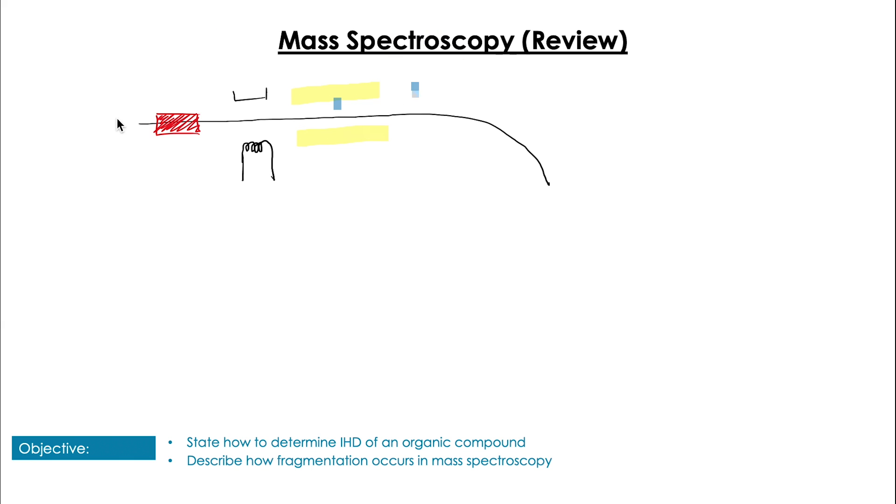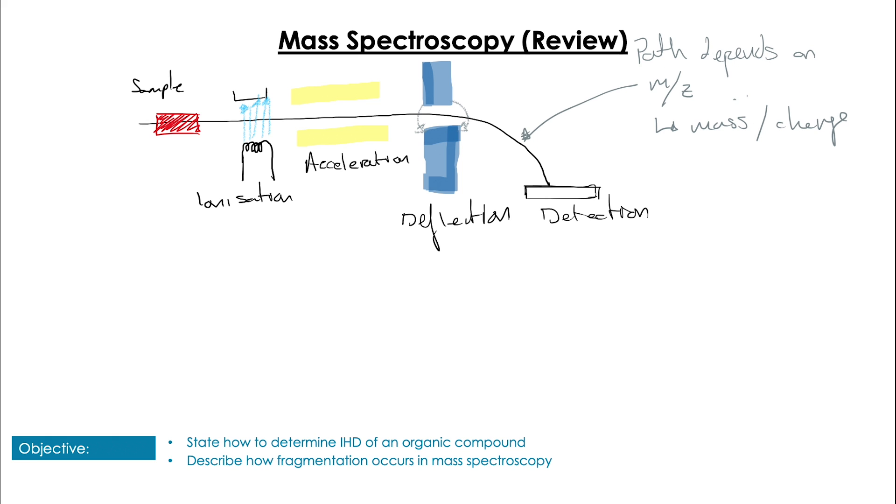So a quick recap of the process: a sample in mass spectrometry undergoes four main stages. It is ionized, then it is accelerated, it is then deflected, and then it is detected. And the radius of the path by which it is deflected in a known magnetic field helps us get an m/z value, a mass over charge value, and that helps us determine the molecular mass.